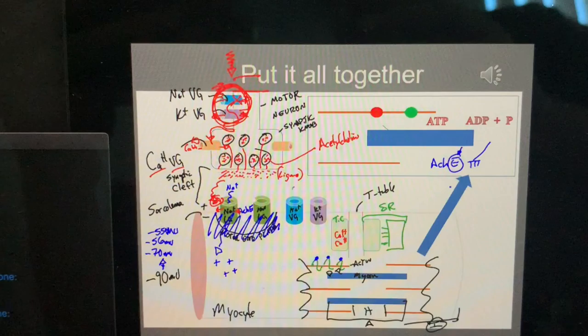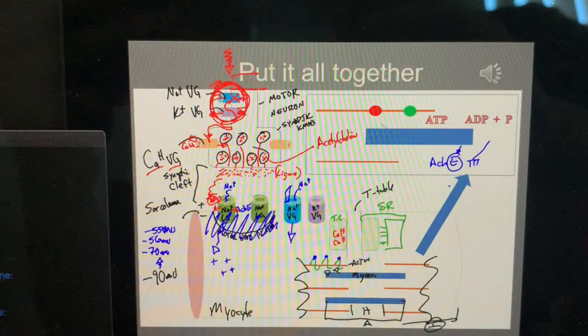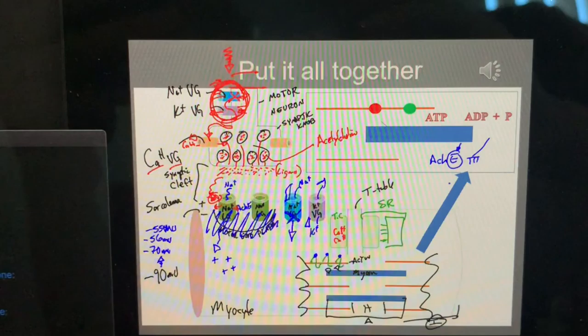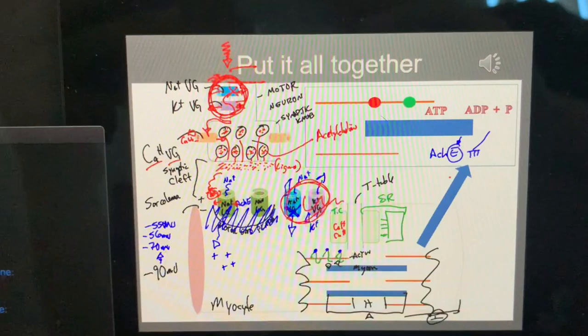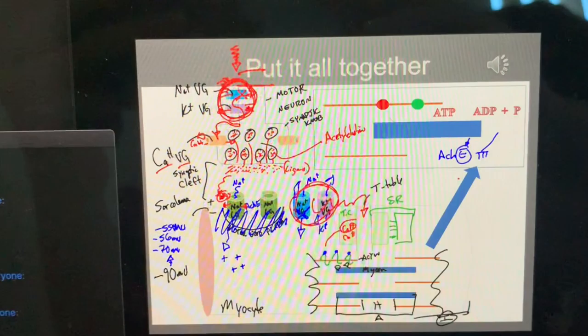What happens? You got this area, the threshold for this gate. Sodium door opens up, sodium rushes in. Plus 30, this door opens up, potassium gets kicked out. What do I call this? Action potential. And you flip-flop, flip-flop down a t-tubule. The birds are coming, the birds are coming! Release the hounds!